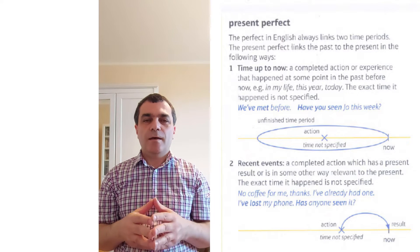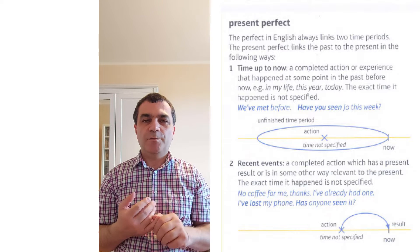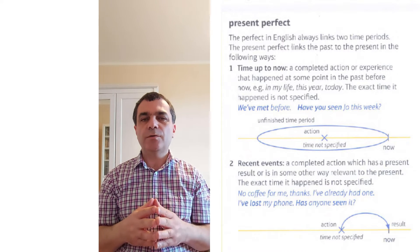Present perfect. The present perfect in English always links two time periods. The present perfect links the past to the present in the following ways.